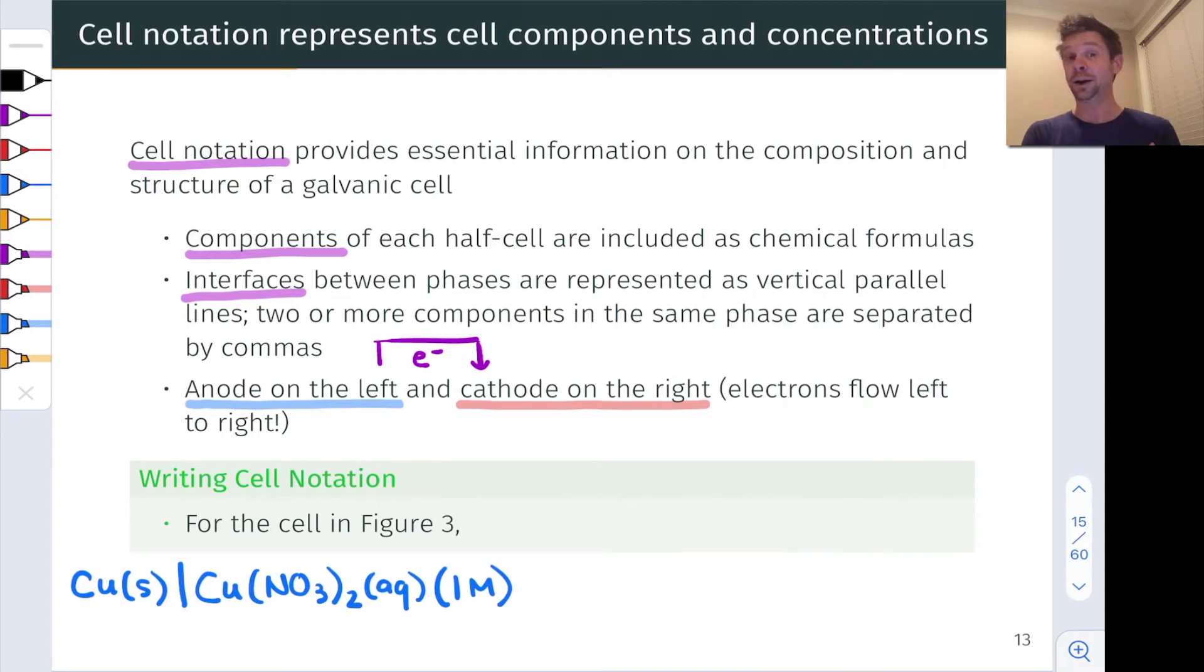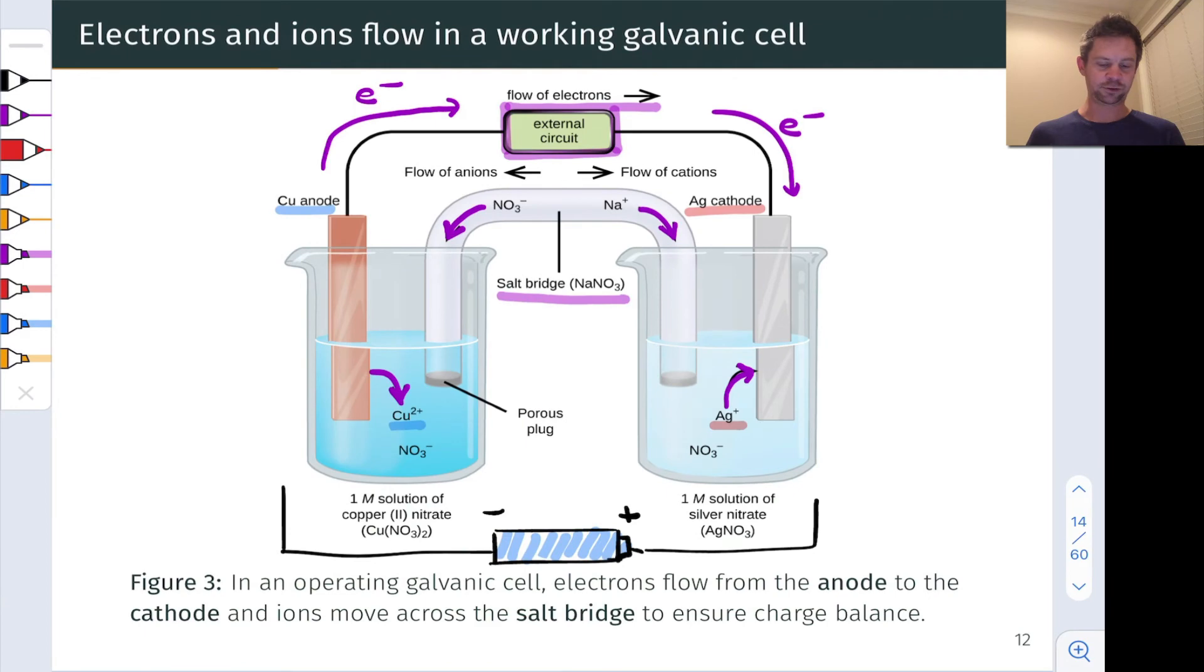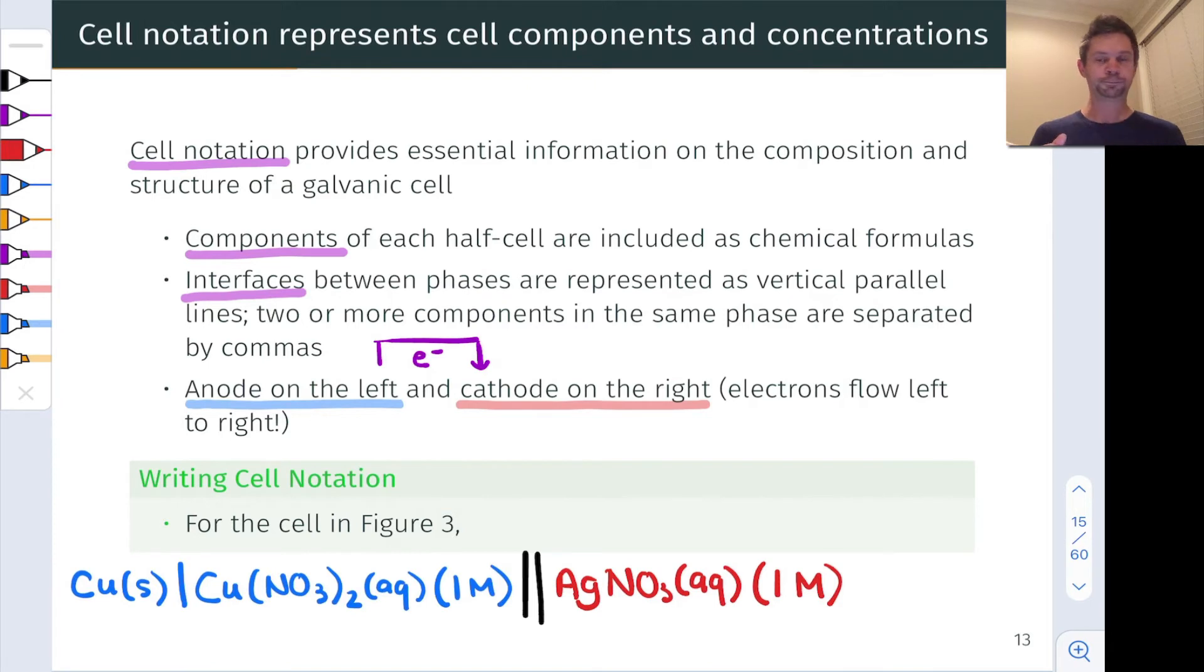Now we're done with the anode side. Since we're moving over to the cathode, we're going to use two vertical lines to indicate separation of the anode and cathode. On the cathode side, the first question is where are the electrons going? They're going into the aqueous silver plus cations. The next thing we'll list is the aqueous silver nitrate solution, AgNO3(aq), and the molarity here is one molar as well.